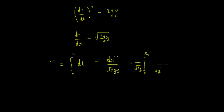Now, as derived in previous videos using Pythagoras, dy² + dx² = ds², so ds = √(1 + y'²) dx. In this instance the constant factor 1/√(2g) sits outside, and the functional or characteristic equation we're looking for is √(1 + y'²) / √y.